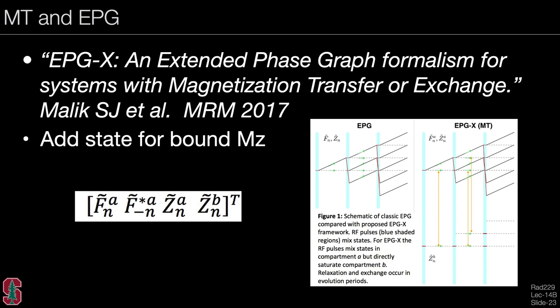Looking back at extended phase graphs (EPG), it is possible to model magnetization transfer effects in EPG and therefore simulate the magnetization transfer effect of any sequence. Essentially, one state is added to EPG for the bound pool, but only the longitudinal component needs to be modeled because the T2 is so short that any transverse component dies out almost immediately. This results in four states in EPG instead of three.